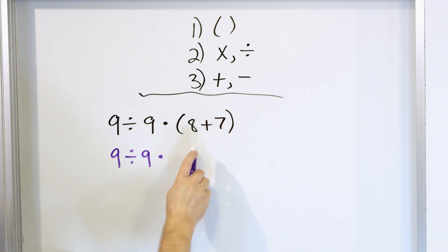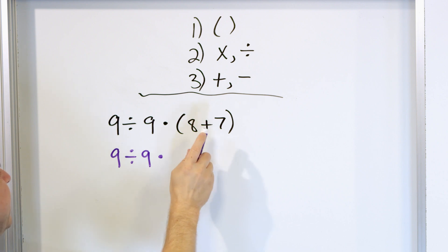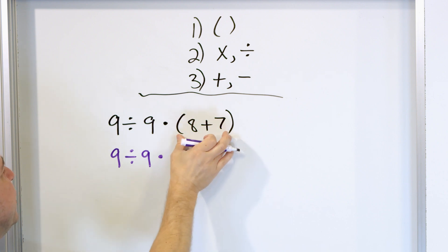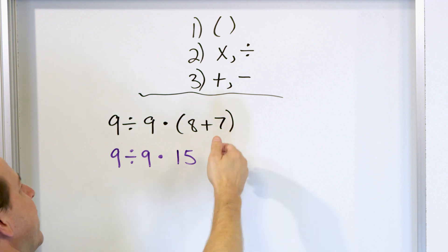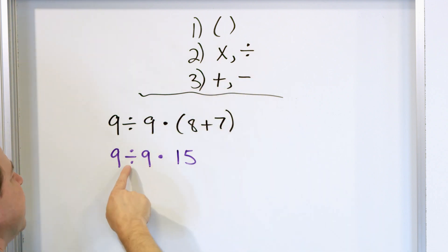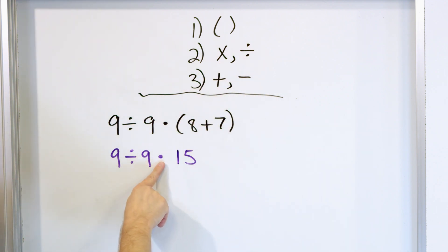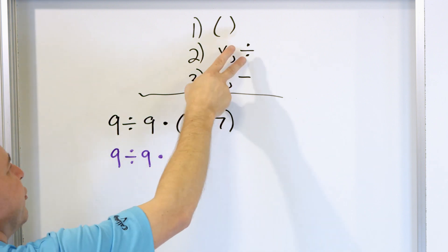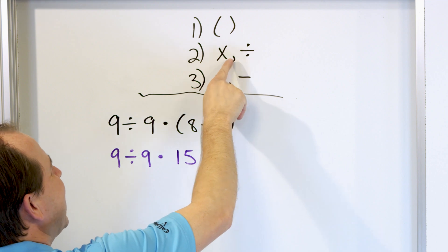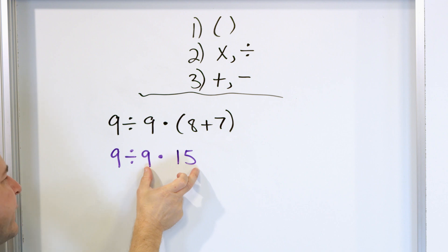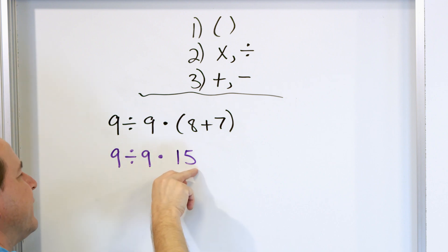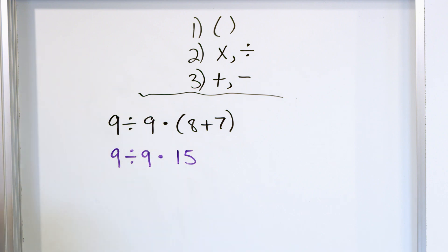What is 8 plus 7? That's 15. So you calculate this, drop the parentheses, and rewrite the problem — all we've done is that first step. Next, we don't have any more parentheses, so we look for multiplications and divisions. We have a division and a multiplication. Notice they're at the same priority order, so we must do them left to right, like reading a book.